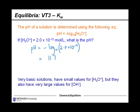That's probably something you already knew. It's common knowledge that low pH values mean something is very acidic. And as you get up towards a pH value of about 14, that's when something's becoming very alkaline. Very basic solutions have small values for H3O+ but very large values for OH-.